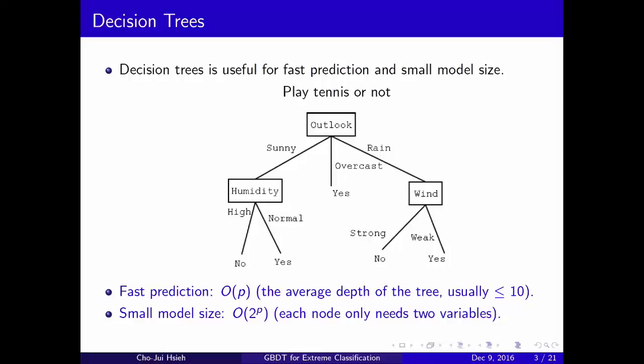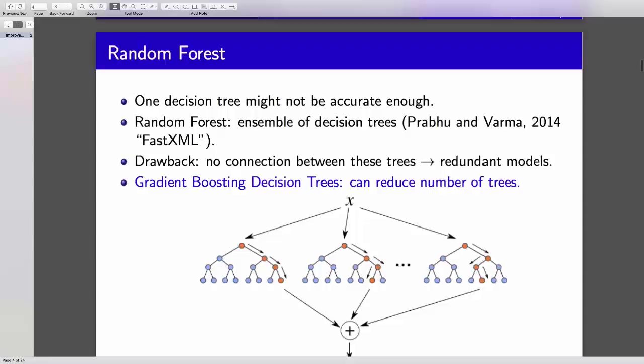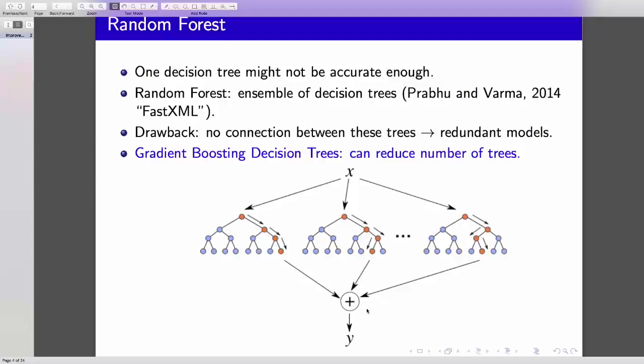We choose decision tree to be our base learner. And actually, Manik also did this before. FastXML is another decision tree-based extreme classification algorithm. In FastXML, they choose to use the random forest approach, which means you try to learn maybe 100 decision trees independently and then average the result to give the prediction. So in this case, they will need a lot of trees because each tree is built independently, and the models are redundant in this case. We try to apply a gradient boosting decision tree algorithm to solve this problem, to reduce the number of trees.